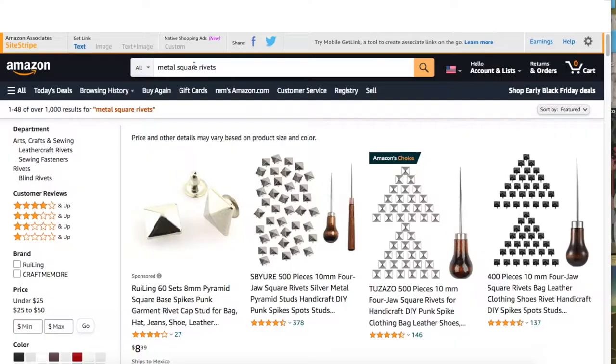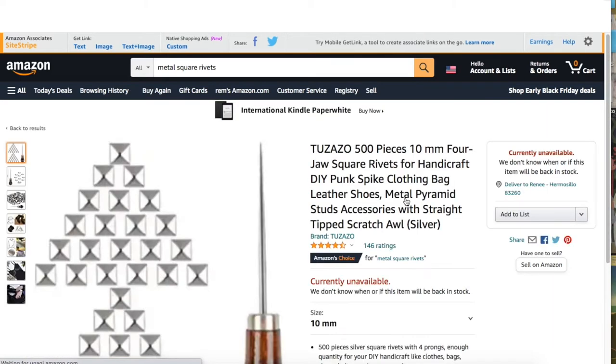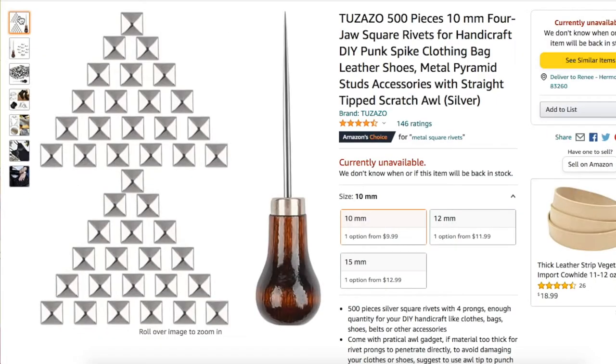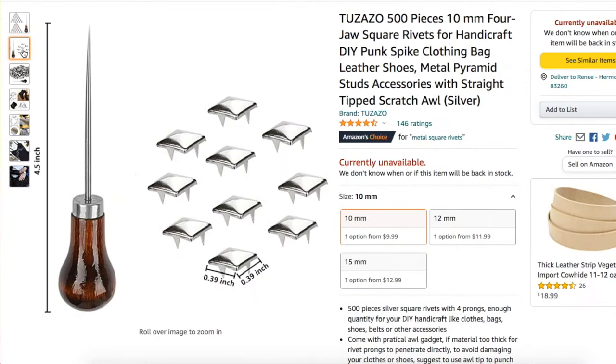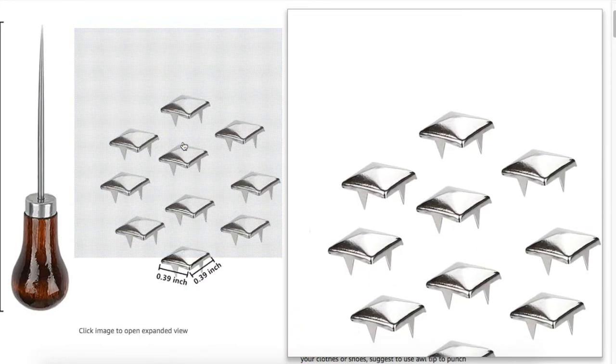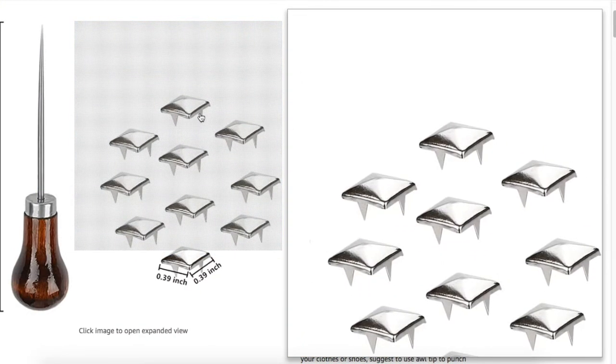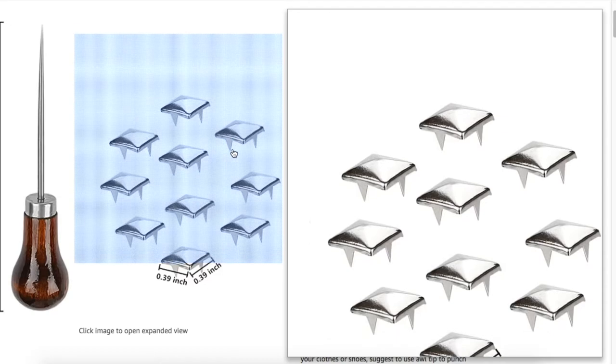Usually rivets look like this—they have four pointy parts that you fold into fabric, shoes, bags, whatever you're adding them to. I wanted to mention that because they are different in that sense. But if you're using traditional rivets, just fold those four parts until they are flat, and it's going to be pretty much the same.